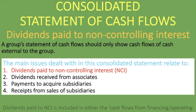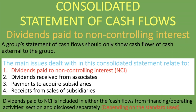Dividends paid to non-controlling interest are included in either the cash flows from financing activities or operating activities section, and disclosed separately — but this depends on the standard being used. If you're using US GAAP, you will see it in cash flows from financing activities. Under IFRS, it can appear in either financing or operating activities. We have done a separate short lesson explaining that difference, which you'll find in the link in the description below.